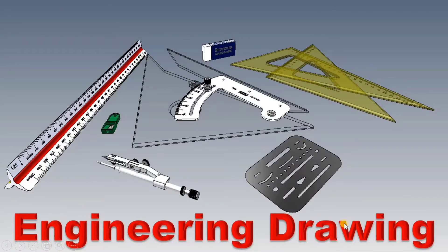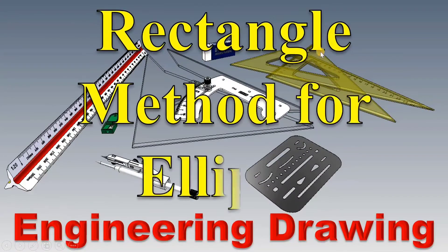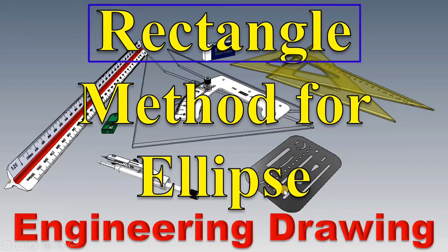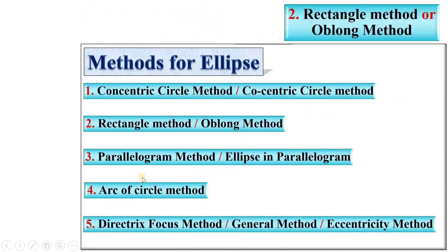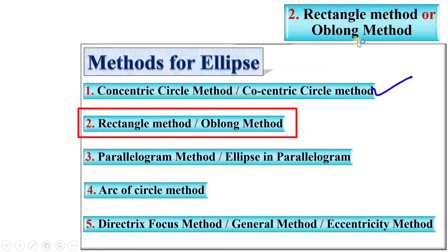Welcome to my engineering drawing playlist. Today I am going to discuss the rectangle method for the ellipse. Basically there are different methods for the ellipse. In the previous video we discussed the concentric circle method; now it is time for the rectangle method, which is sometimes also known as the oblong method.